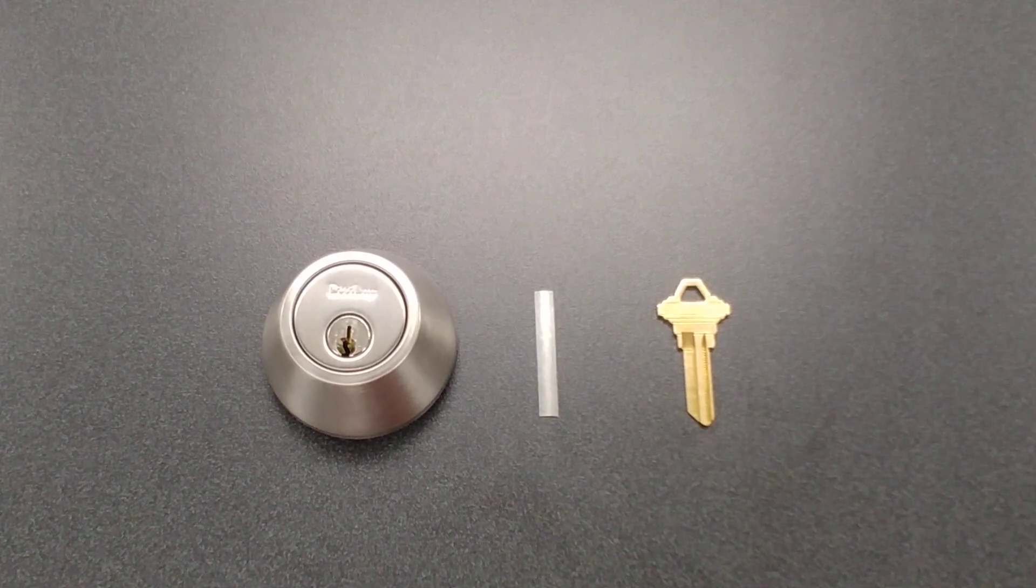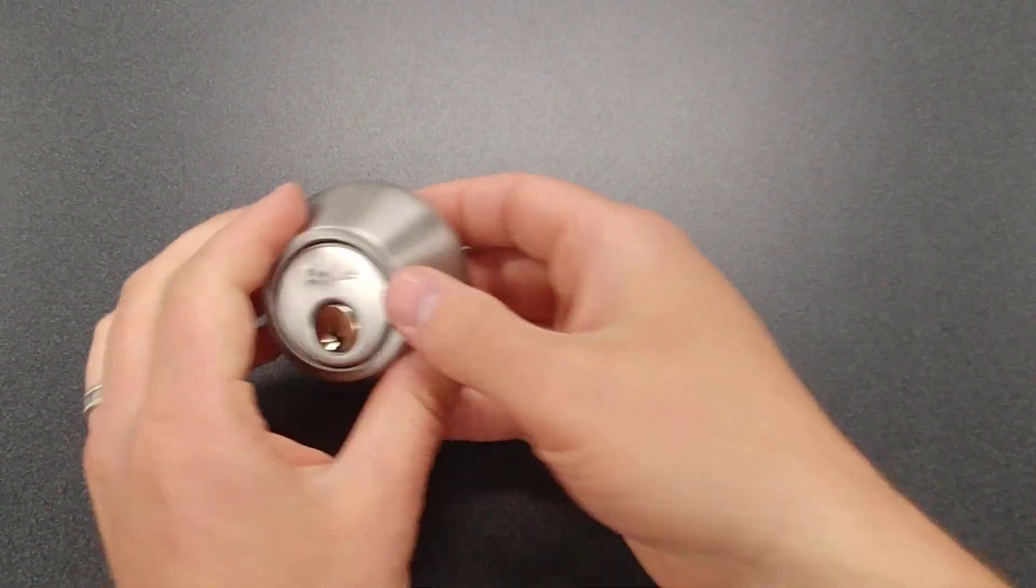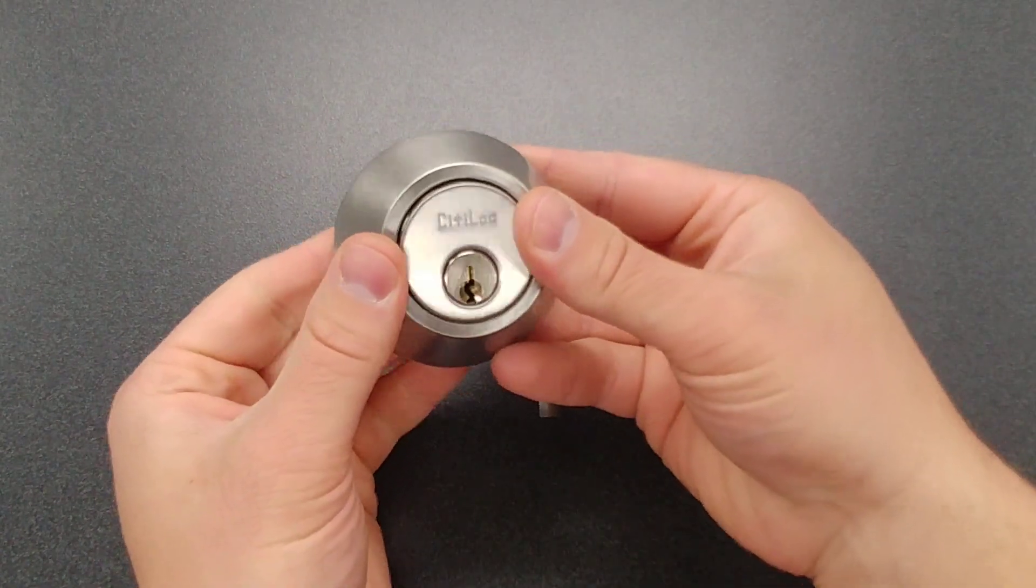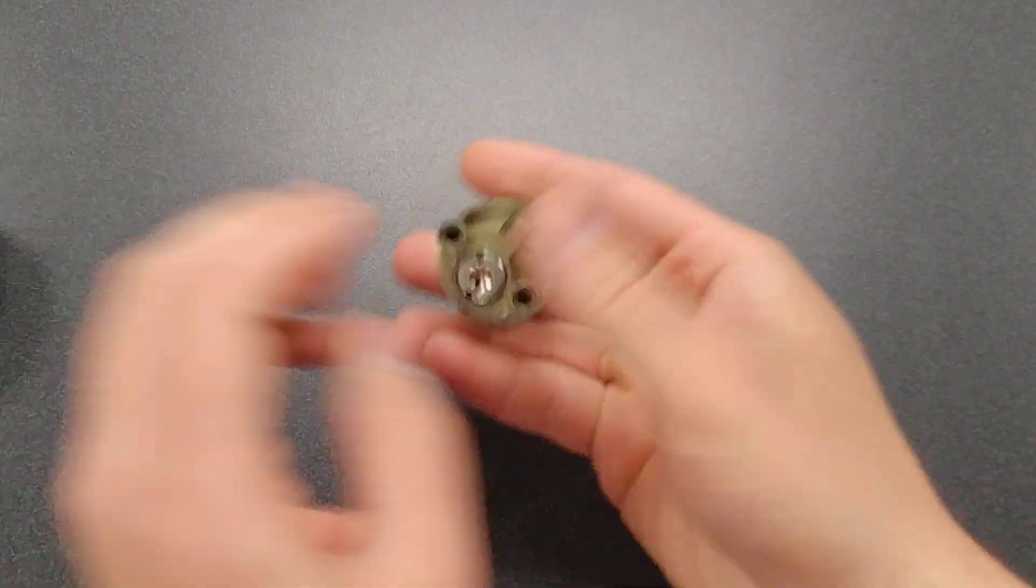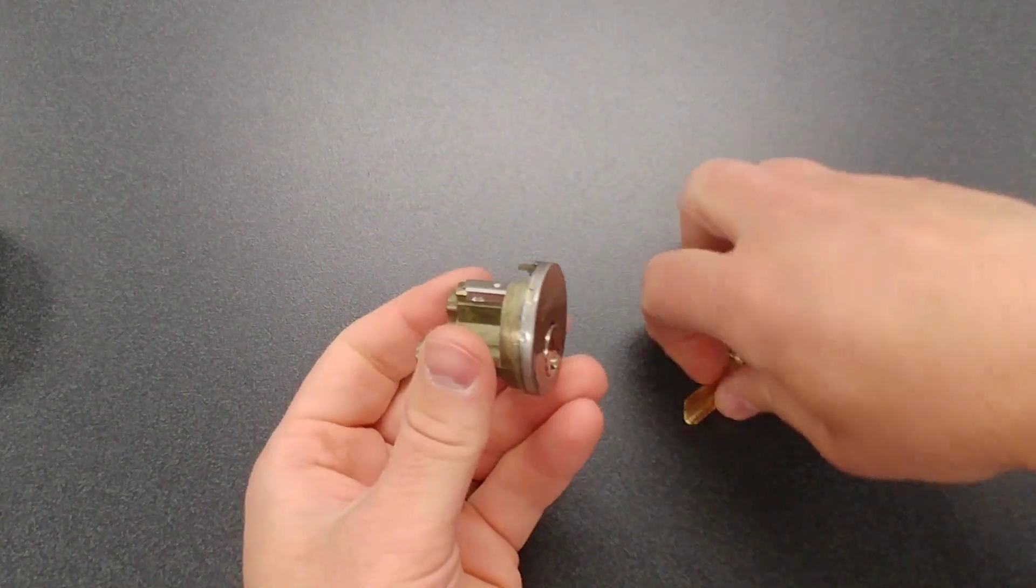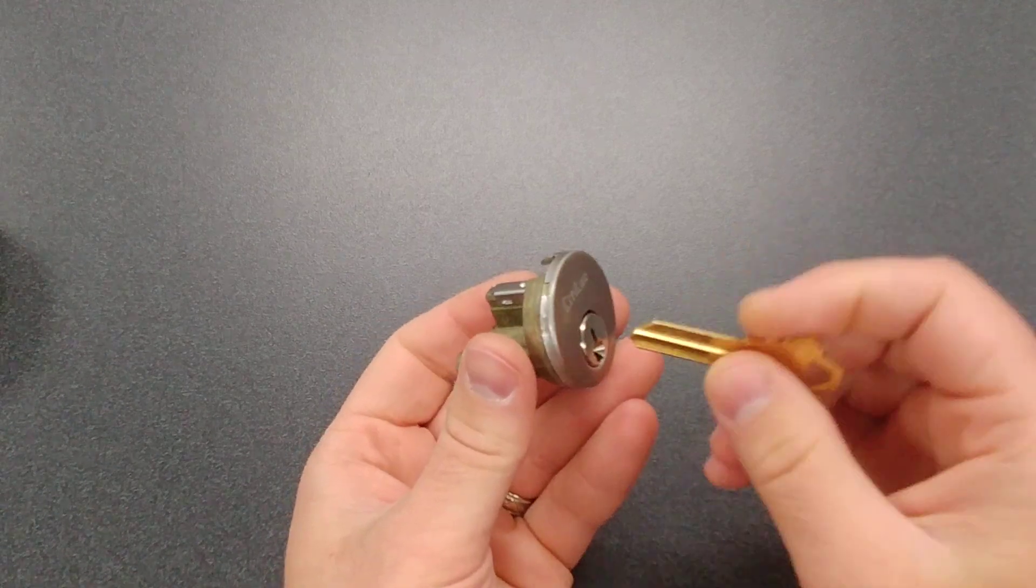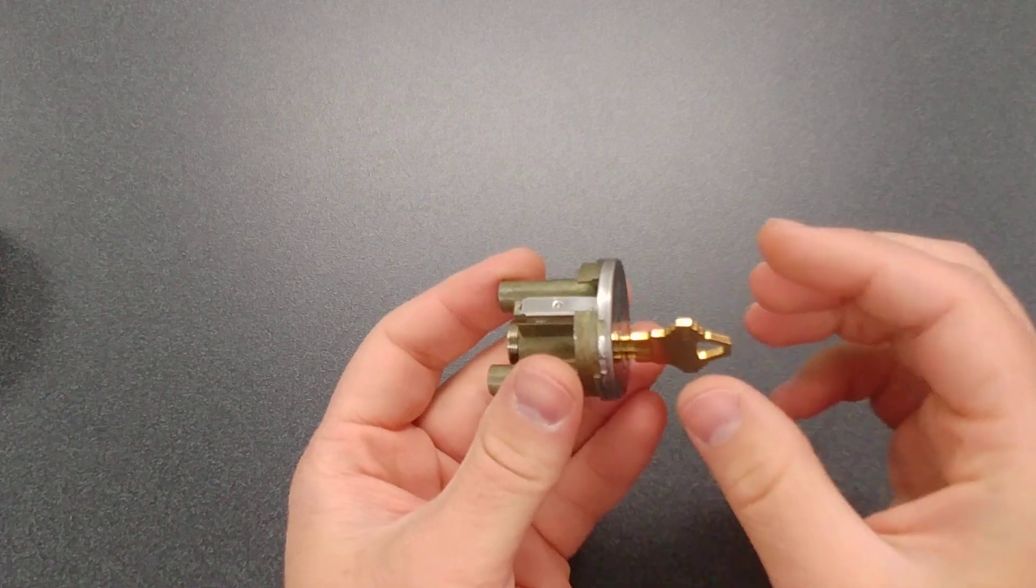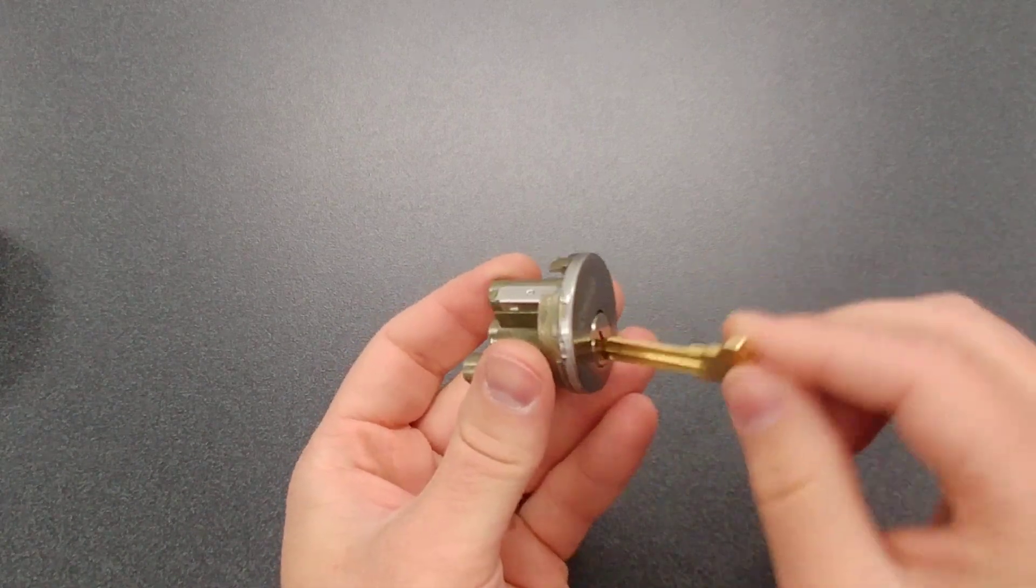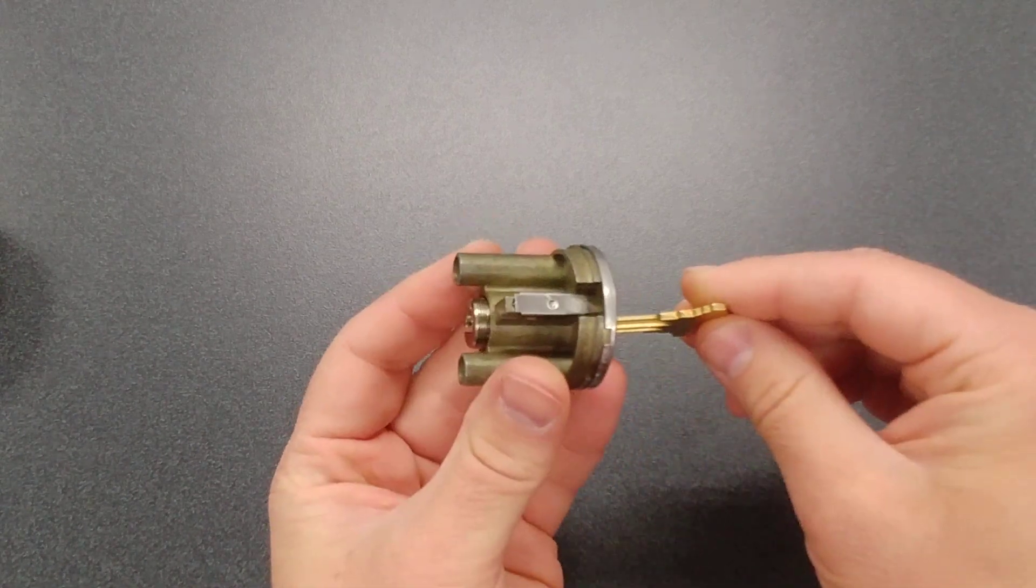This is just a standard Schlage lock deadbolt. I went ahead and took off the tail pieces on the back just to save a little bit of time in the video. It's always good to spray some lubricant in here like Houdini. If the pins aren't very, if you stick the key in, it's kind of tight. This is a brand new lock cylinder. I just pulled that inventory.